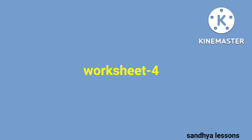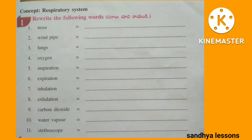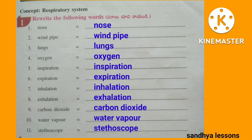Worksheet 4. First, rewrite the following words: nose, windpipe, lungs, oxygen, inspiration, expiration, inhalation, exhalation, carbon dioxide, water vapor, stethoscope.